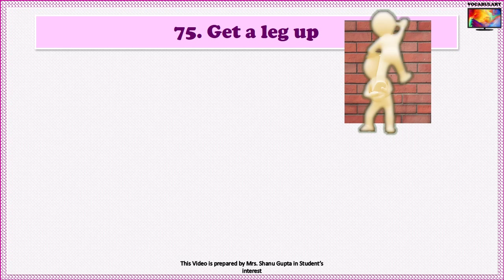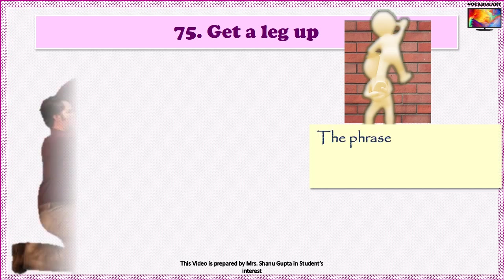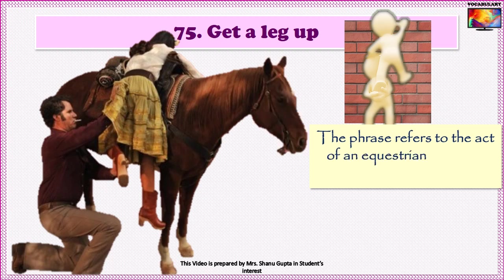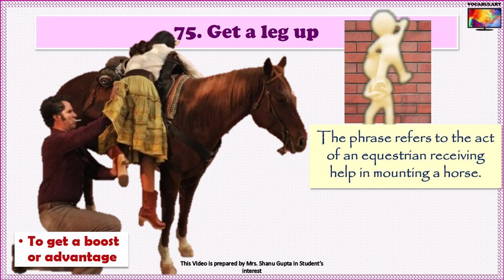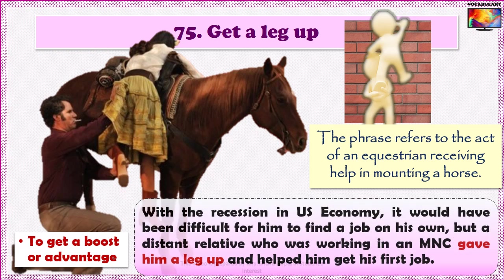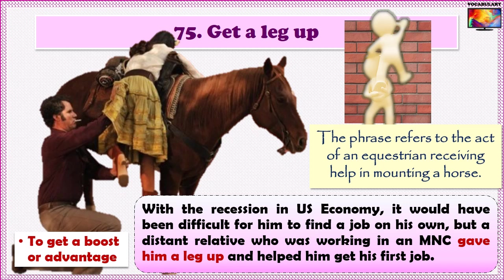The 75th idiom is 'To get a leg up.' The phrase refers to the act of an equestrian — a rider of a horse — receiving help in mounting a horse. So, if someone gets a leg up, he gets a boost or advantage from some source. An example: 'With a recession in the US economy, it would have been difficult for him to find a job on his own, but a distant relative who was working in an MNC gave him a leg up and helped him get his first job.'